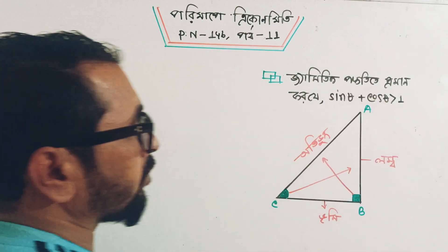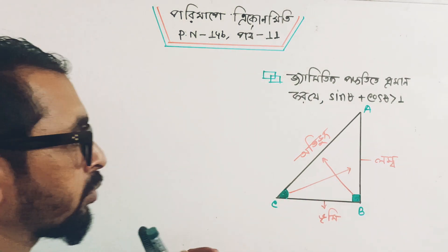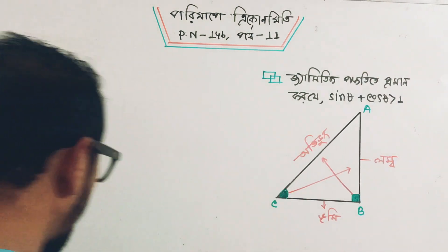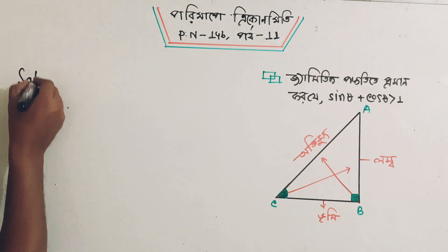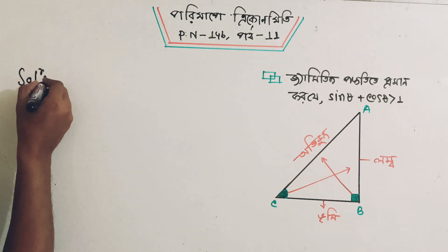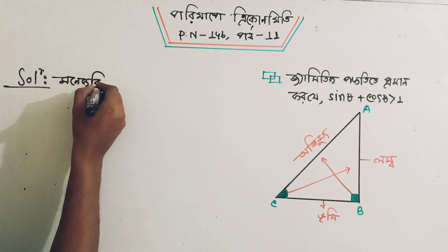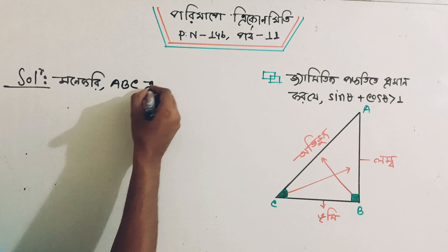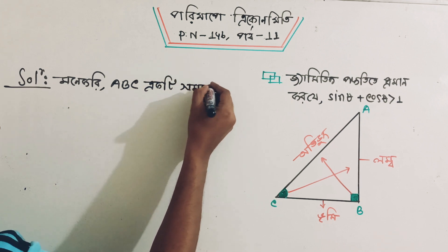This is the opposite of the hypothesis. This is the hypothesis. So we will see this in the class. We will see the hypothesis that sin is equal to 1. Let's take a look at the solution, let's take a look at the right angle triangle.